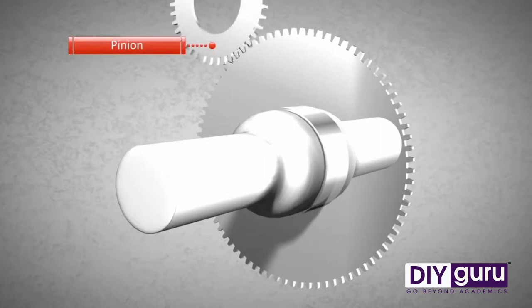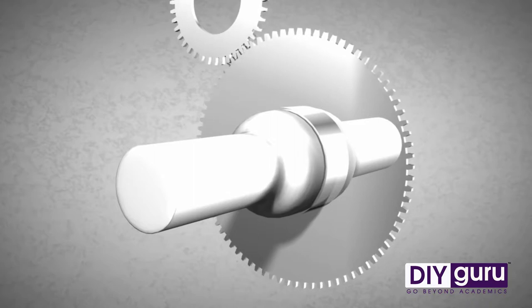The flywheel features external teeth that are used to start the engine of the vehicle. When the car key is turned, the engine is started with the help of a pinion and the battery. After a small amount of time, the engine runs on fuel.